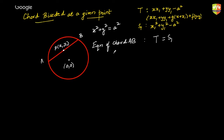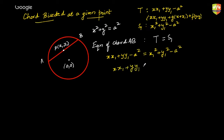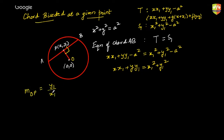Let's quickly prove that the equation of this chord is given by x·x₁ + y·y₁ − a² = x₁² + y₁² − a², which simplifies to x·x₁ + y·y₁ = x₁² + y₁². It's very simple — you just use the basic idea of forming the equation of a line when you know a point on it and the slope. If you drop a perpendicular from the center onto the chord, it meets the chord at (x₁, y₁), so this angle is 90°. The slope of OP is y₁/x₁, so the slope of AB is −x₁/y₁.